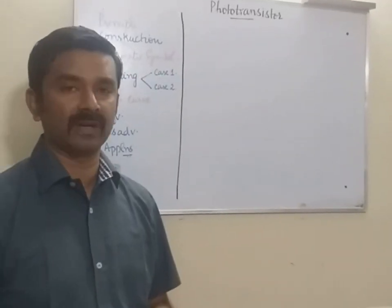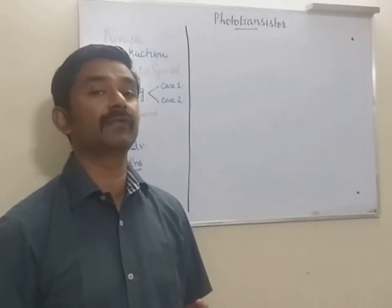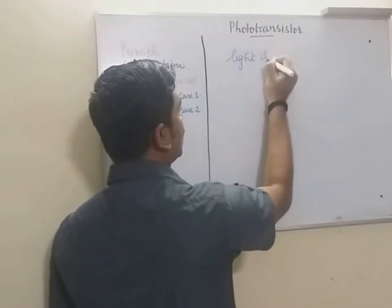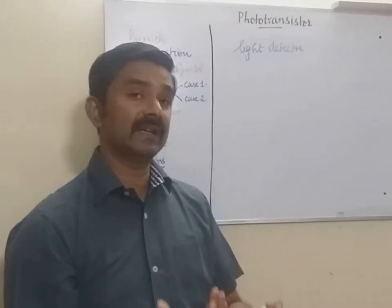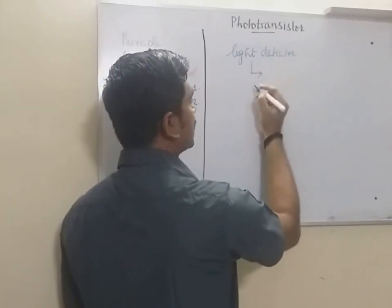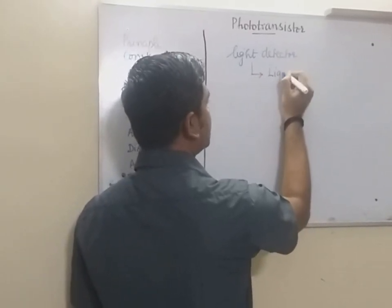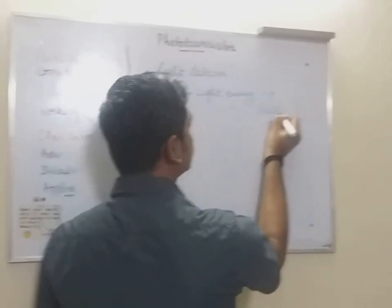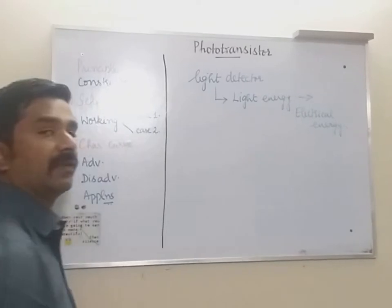The principle of operation of a phototransistor is very similar to that of a photodiode. A phototransistor is a light detector which is able to convert light energy into electrical energy. This is the working principle of a phototransistor.